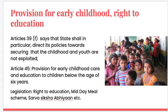The Directive Principles of State Policy aims to establish the idea of a welfare state through its provisions for governance. Children, as the future of the nation, need to be included in the fold of welfare. Hence, the Directive Principles of State Policy make provisions for the welfare of children since early childhood. One of the most important provisions is mentioned in Article 39, which states that the state shall ensure that children and youth are not exploited.